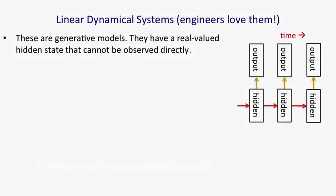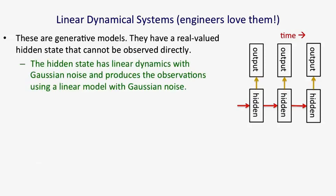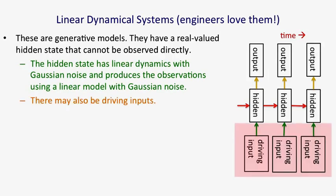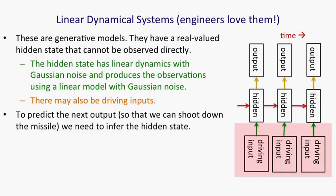So one standard model is a linear dynamical system. It's very widely used in engineering. This is a generative model that has real-valued hidden state. The hidden state has linear dynamics, shown by those red arrows on the right. And the dynamics has Gaussian noise, so that the hidden state evolves probabilistically. There may also be driving inputs, shown at the bottom there, which directly influence the hidden state. To predict the next output of a system like this, we need to be able to infer its hidden state. And these kinds of systems are used, for example, for tracking missiles. In fact, one of the earliest uses of Gaussian distributions was for trying to track planets from noisy observations. Gauss actually figured out that if you assumed Gaussian noise, you could do a good job of that.